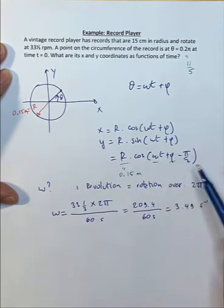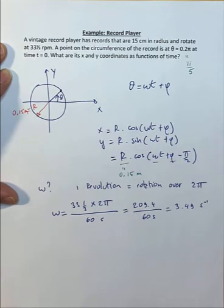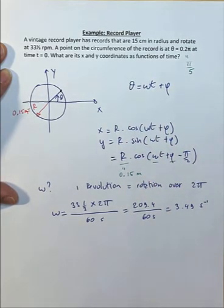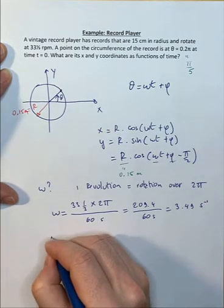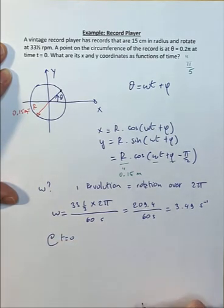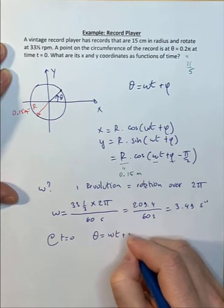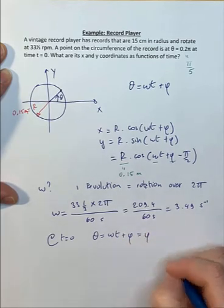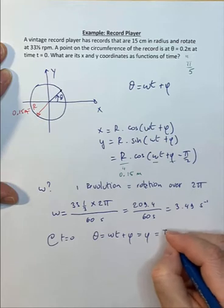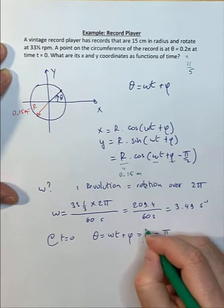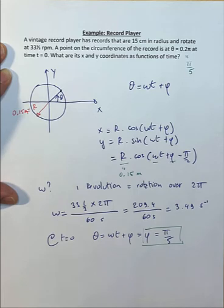We have r, we have omega, the only thing left to determine is that phase angle phi. To determine that, we know that at t equals zero, theta is going to be 0.2π. At t equals zero, theta is omega t plus phi, but we have t equals zero, so that actually is phi. It's given that this is π over 5, so that means essentially phi must be π over 5.